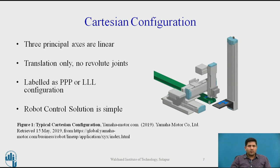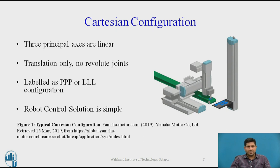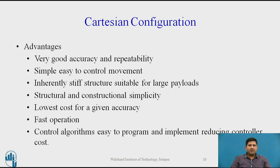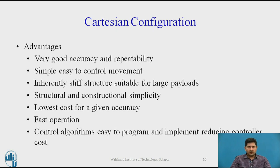One advantage of this configuration is that the robot control solution is very simple — forward kinematics and even inverse kinematics are very easy and easy to program. Some advantages of Cartesian configuration are its very simple and robust construction. It's very accurate and delivers very high repeatability. It's simple and easy to control movement — forward kinematics and inverse kinematics are very easy. It has a very simple, robust structure, so it's inherently stiff and suitable for large payloads.